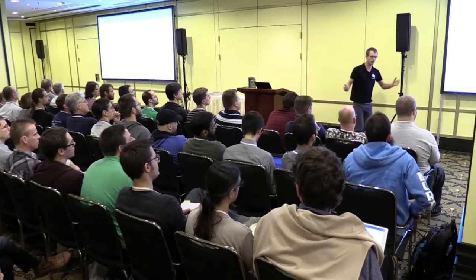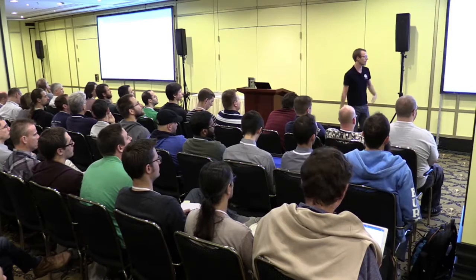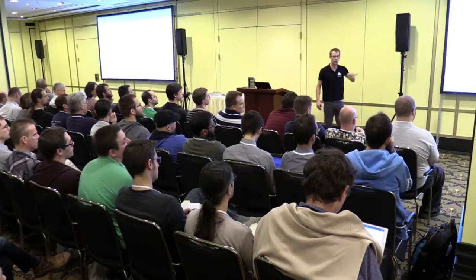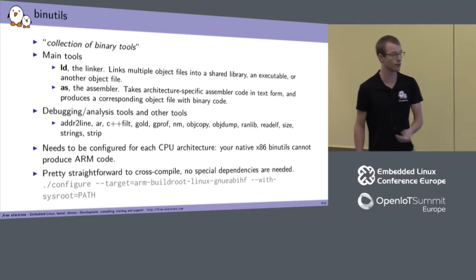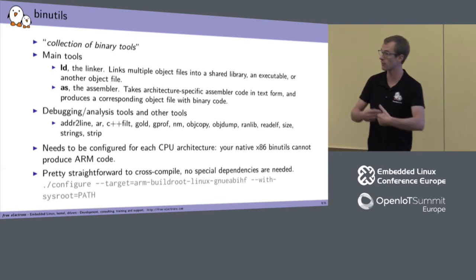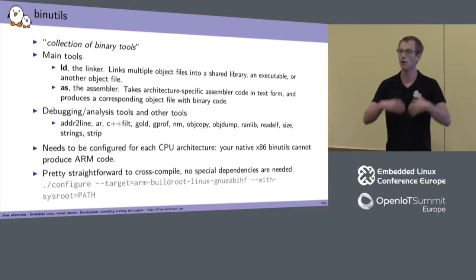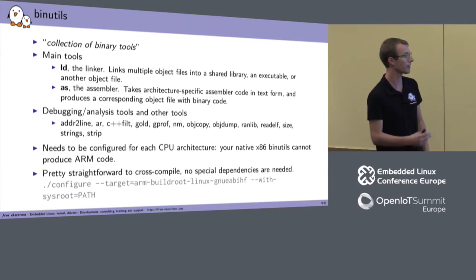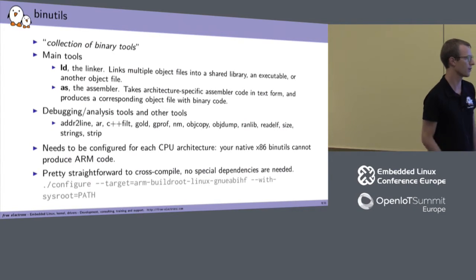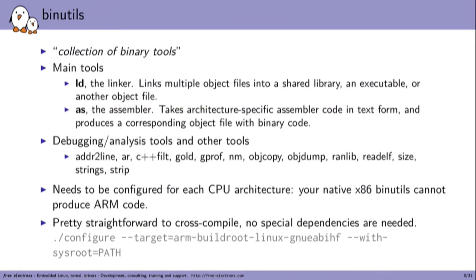Building Binutils is pretty easy — it's autotools-based, just a configure script. The main thing you need to specify is what you're targeting using the build, host, and target parameters. I've left out build and host so autoconf guesses my build machine, overriding only the target — in this case generating binaries for an ARM Linux GNUEABIHF system. Another thing to pass is the sysroot directory, which I'll explain later.